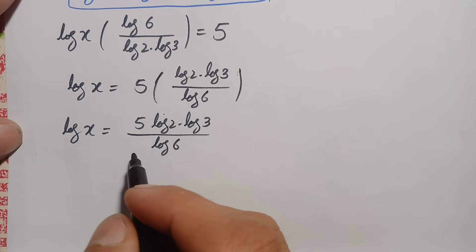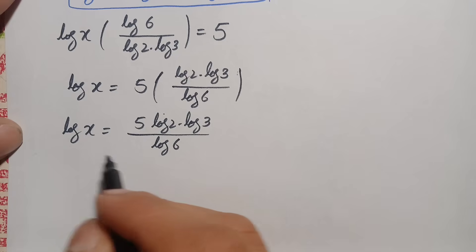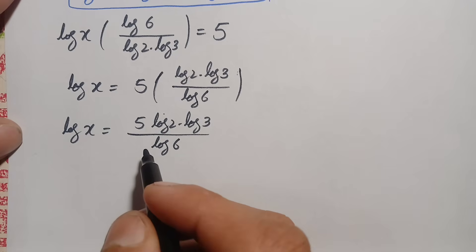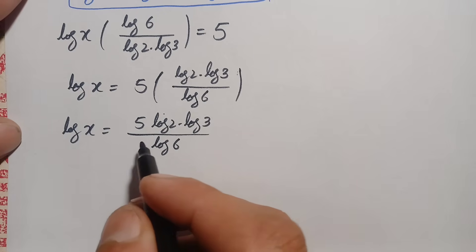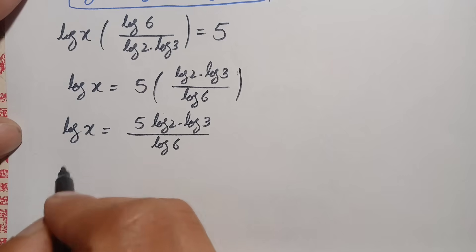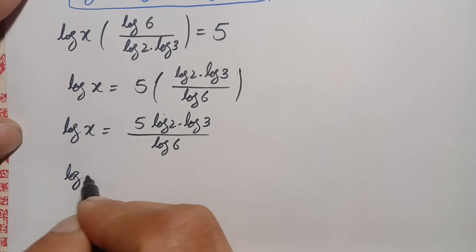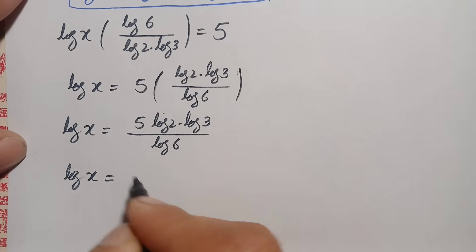We will solve this using two different approaches. For the first approach, we write: log of x is equal to 5 times log of 2 times log of 3, divided by log of 6.